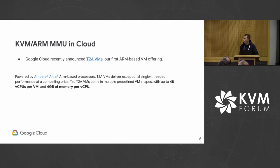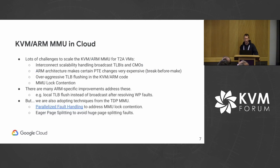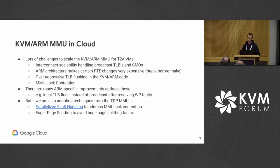Google Cloud recently announced its first ARM-based VM offering, T2A VMs, supporting up to 48 vCPUs and 4 gigs of RAM per vCPU, based on the Ampere Altra ARM-based processors. We faced a lot of challenges scaling the KVM ARM MMU for these VMs — there's interconnect scalability to handle broadcast TLBIs and cache maintenance, and the ARM architecture requires certain PT changes to use break-before-make, which makes them very expensive.